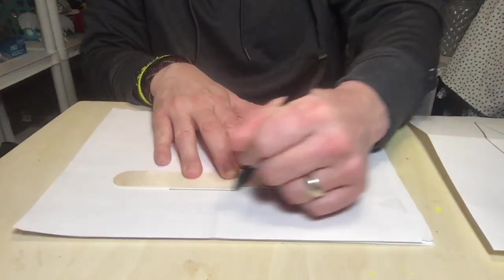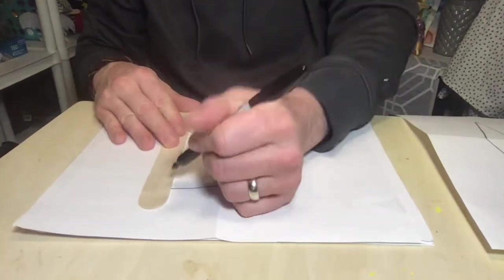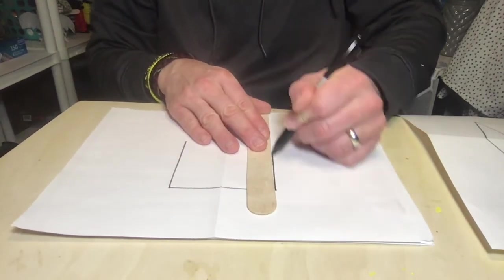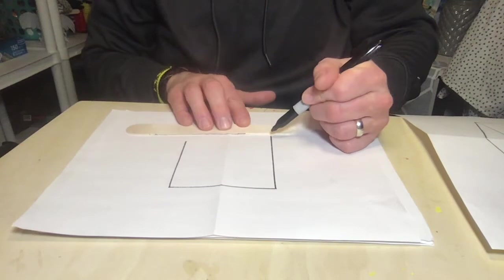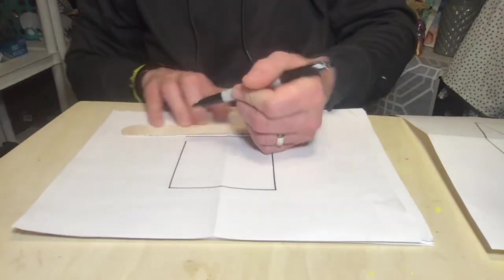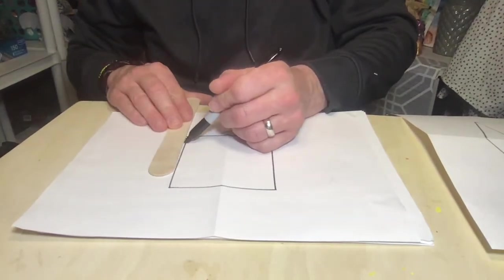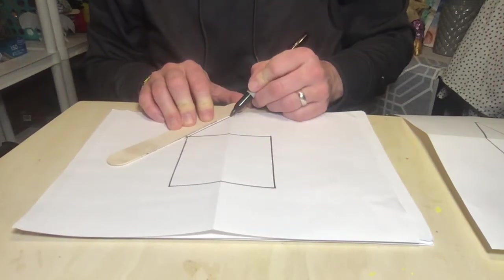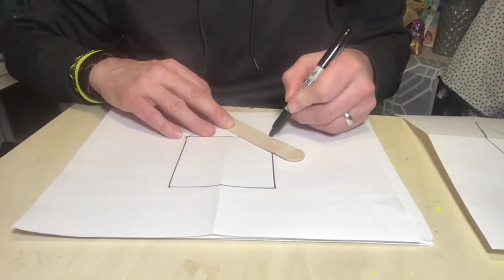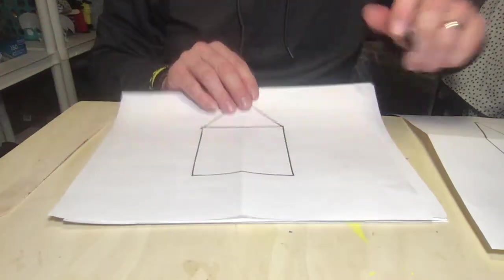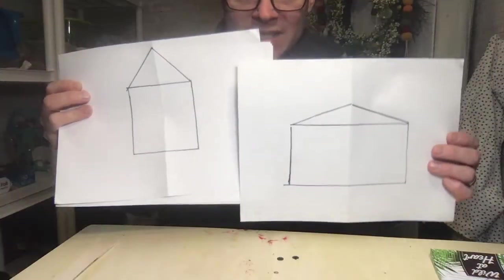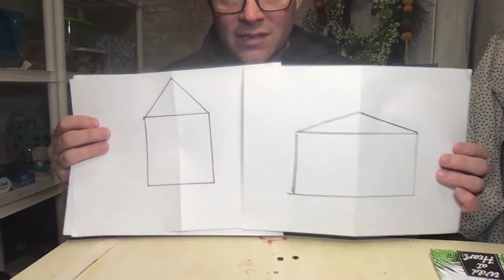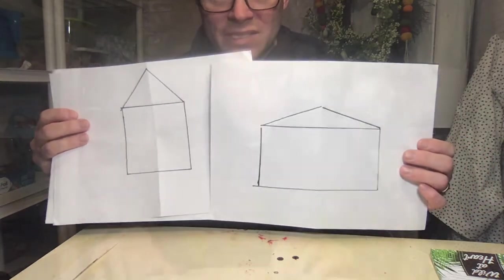I'm going to do maybe a tall box, and this time I'm going to raise the pitch of the triangle, the height of it. And look at that. Same technique but it created two different houses.